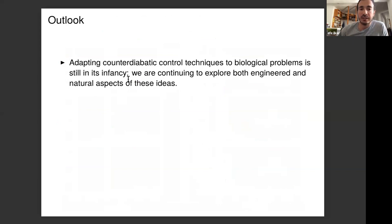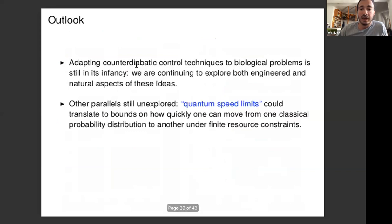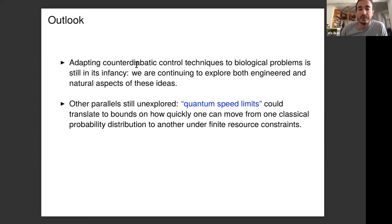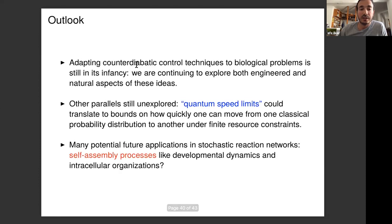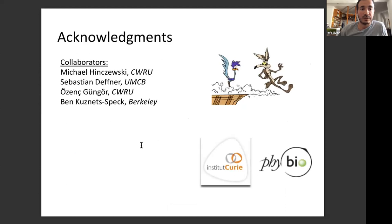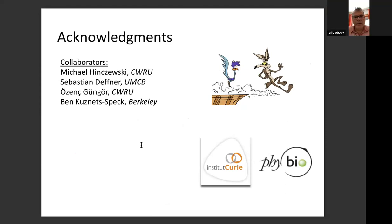In conclusion, counter-diabatic control techniques are very new for biological systems. Incorporating stochastic aspects opens applications to diverse systems. We can also import parallels from quantum systems, such as quantum speed limits, to understand trade-offs under finite resource constraints. Future directions include applying this to many-body dynamics and controlling self-assembly processes in the cell.